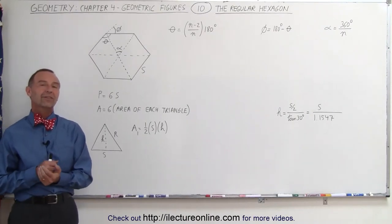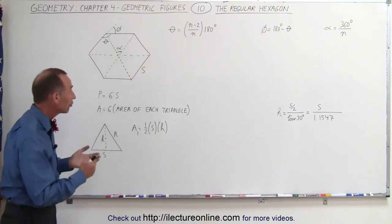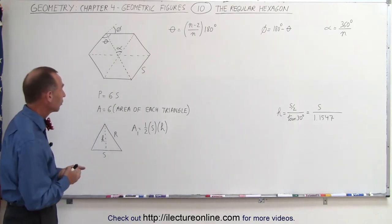Welcome to ElectronLine. Now let's take a look at the hexagon, the regular hexagon, which means all six sides are of equal length.